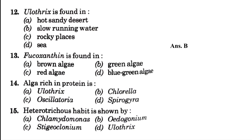Phycocanthin is found in — blank: brown algae, green algae, red algae, or blue-green algae. The answer is option A, that is brown algae. Which alga is rich in protein? Options are Ulothrix, Chlorella, Oscillatoria, and Spirogyra. The answer is option B, that is Chlorella.